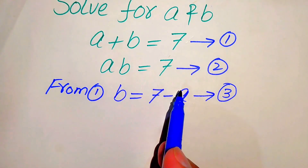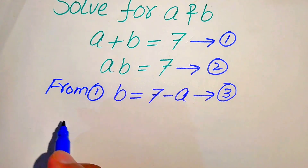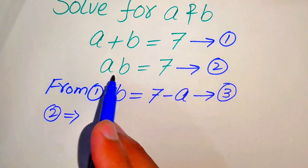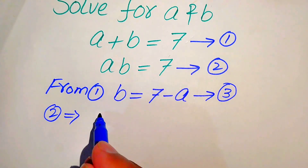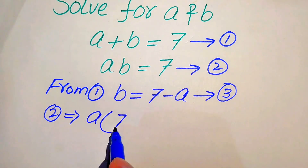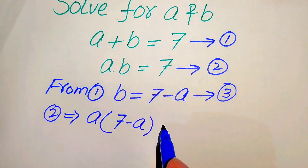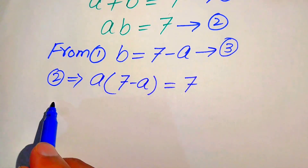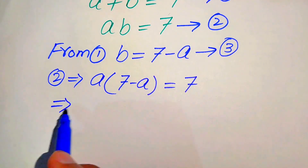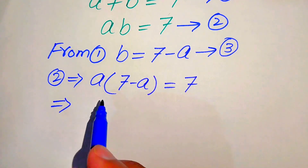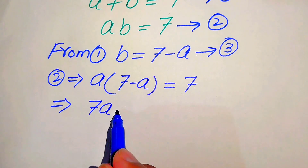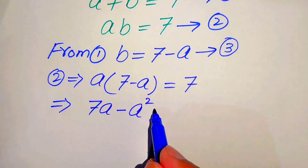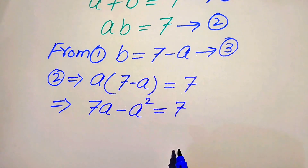Now we use this value of B in equation number 2. Equation number 2 implies that A times (7 minus A) equals 7. Multiplying through gives 7A minus A squared equals 7.